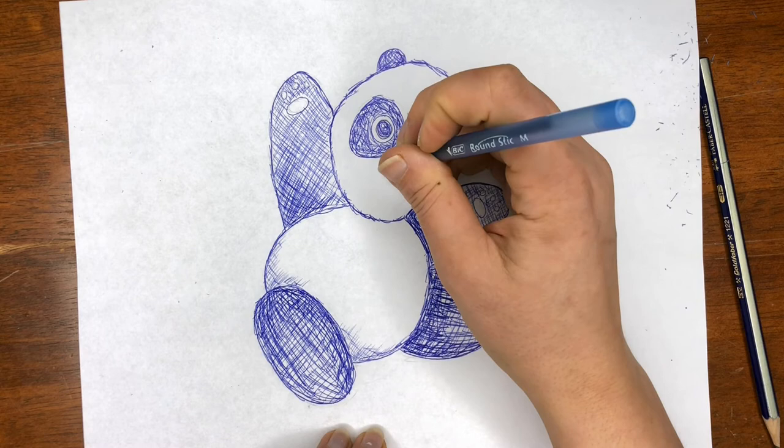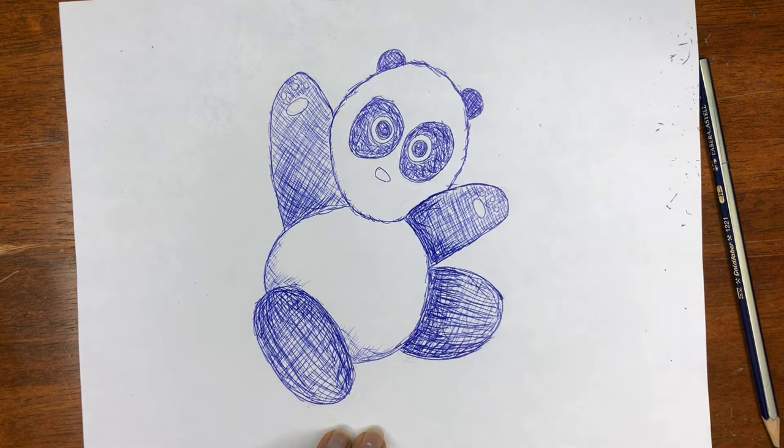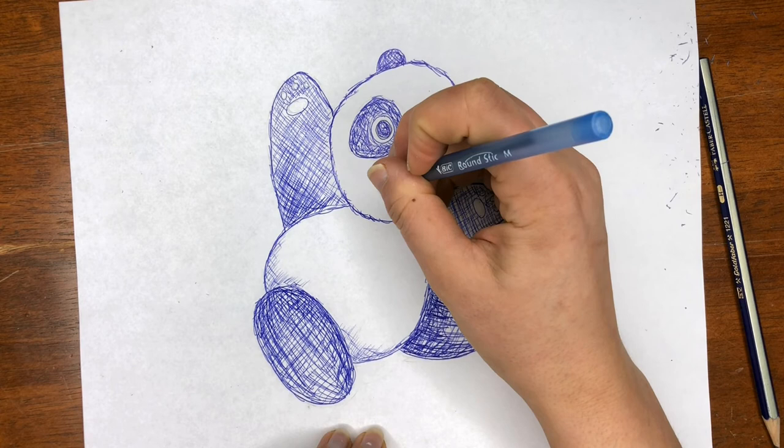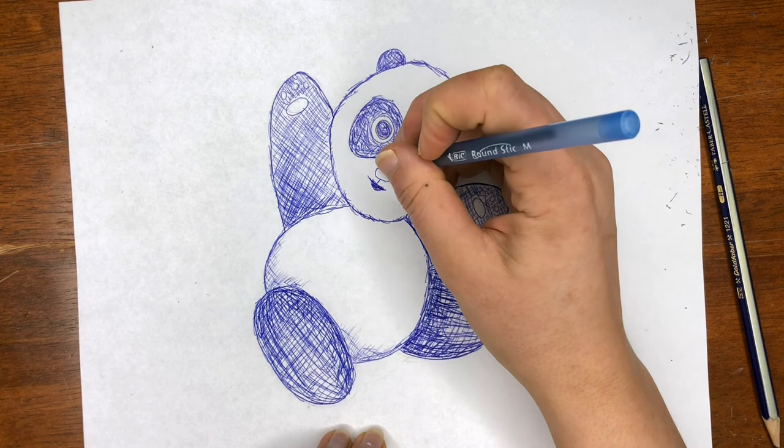And don't forget the nose which I totally did. We're just going to do a little oval, a line coming down, and then we'll do our mouth. And there is our finished panda.